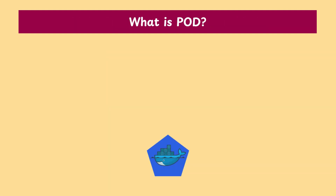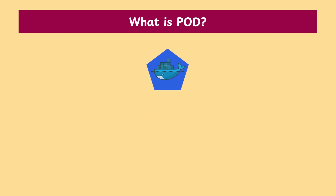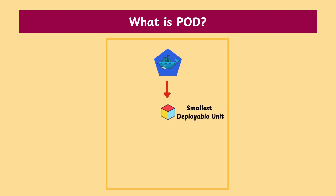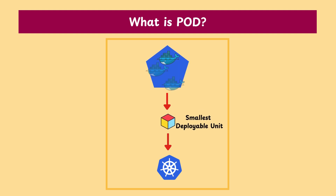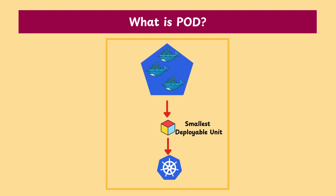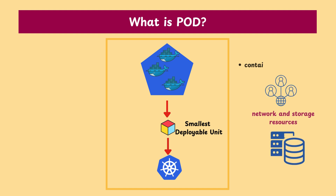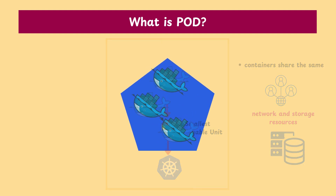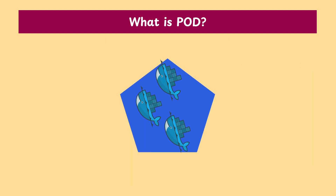So we've been talking a lot about pods — but what is a pod? A pod is the smallest deployable unit in Kubernetes. It holds one or more containers that share the same network and storage resources. Pods are where your containers actually run.